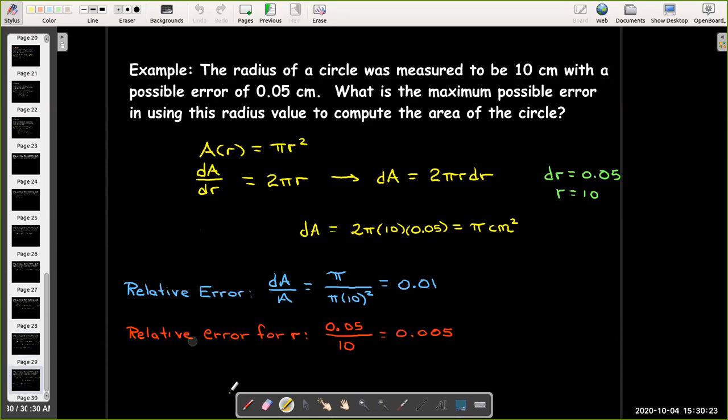If I look at the relative error in r, that would be 0.05 divided by 10, that is 5 thousandths.